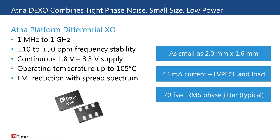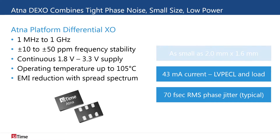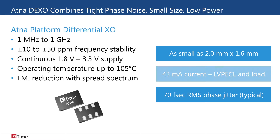For 400 gigabit and 800 gigabit modules, SciTime offers the Atena family of differential oscillators. They are available in a wide frequency range from 1 MHz to 1 GHz, with stabilities as low as 10 ppm and a continuous 1.8 to 3.3 V supply voltage. Atena comes in industry standard packages as small as 2 by 1.6 mm and draws as little as 43 mA of current, all while delivering 70 femtosecond RMS phase jitter.